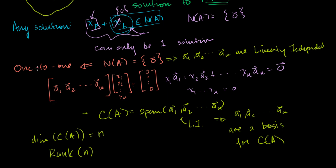So now we have a condition for something to be 1-to-1: a transformation is 1-to-1 if and only if the rank of your matrix equals n. If something is 1-to-1, its null space has only the 0 vector, so columns are linearly independent, giving rank n. Conversely, if rank equals n, all columns are linearly independent, the null space is just the 0 vector, the homogeneous part disappears, and you're left with only one solution — so you're 1-to-1.